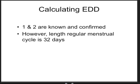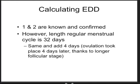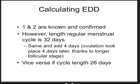Now the scenario where the LMP is known and the cycle is regular, but the cycle length is 32 days. Because ovulation occurred on average 4 days later compared to a standard 28-day cycle, we use the regular rule or wheel but add 4 days. Conversely, if a lady has a cycle length of only 26 days, we would subtract 2 days from the regular rule.